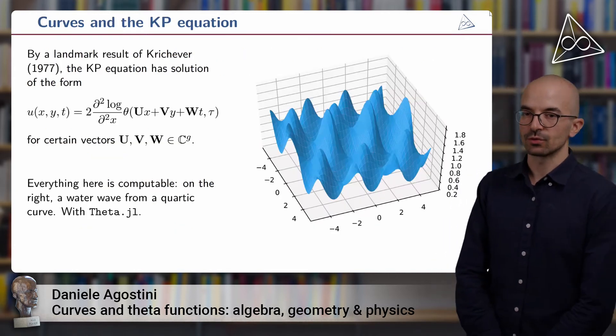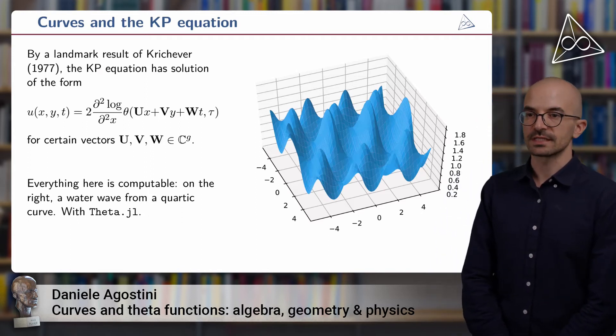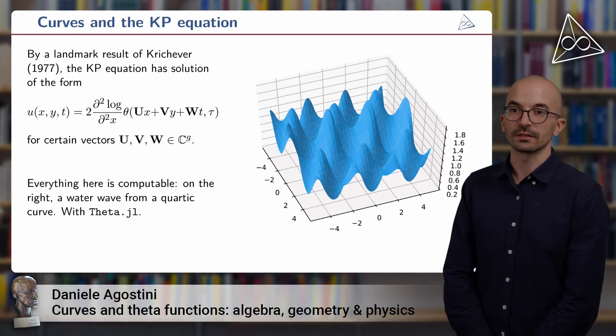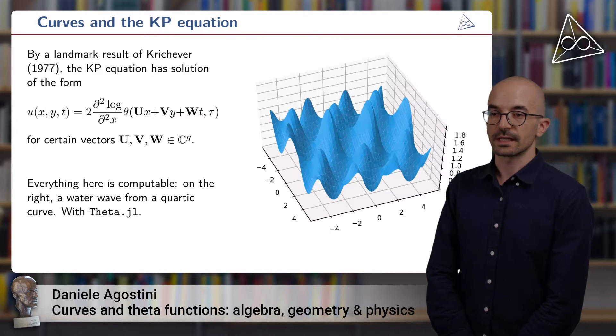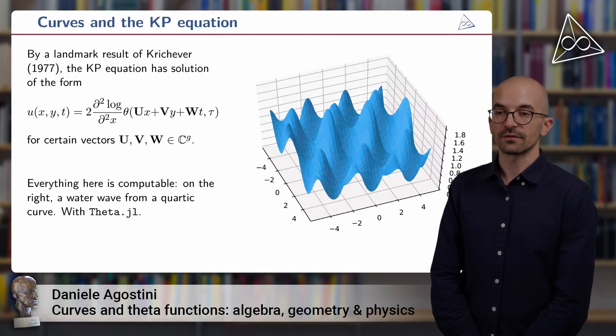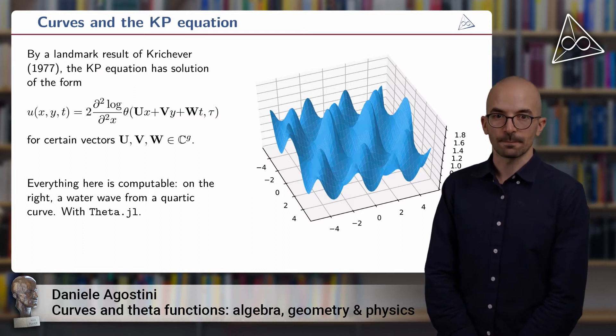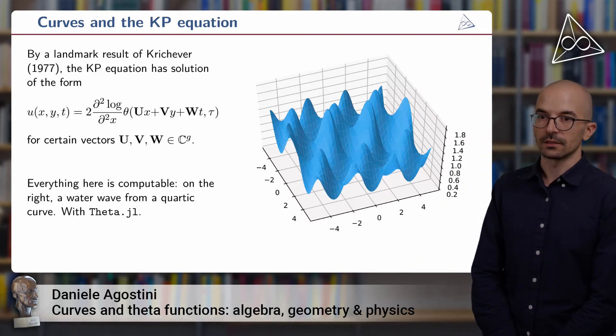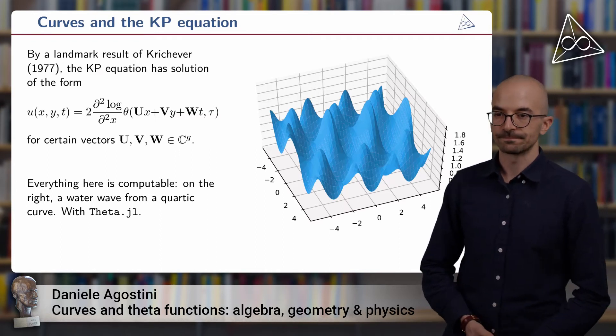Let's come now to our water waves. This is a result of Krichever from the 70s, that if you have a smooth curve of genus G and the corresponding Riemann matrix tau, then you can find a solution of the KP equation of this form. It's like a second logarithmic derivative of the theta function where you replace the argument z with a linear combination ux + vy + wt. And this for a certain choice of the vectors u, v, and w.